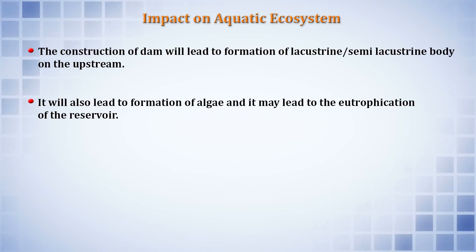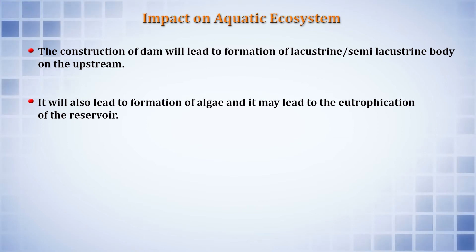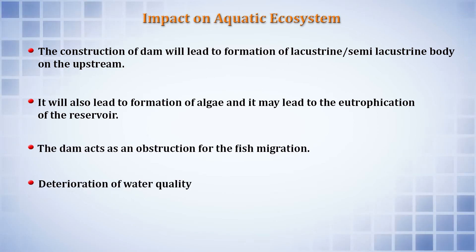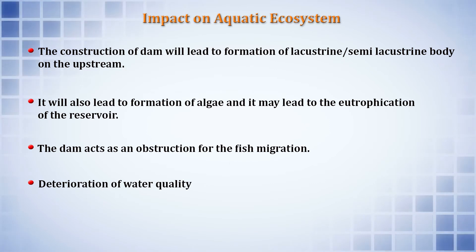Regarding impacts on the aquatic ecosystem, construction of a dam will lead to formation of a lacustrine or semi-lacustrine body in upstream areas, formation of algae, and eutrophication of the reservoir. The dam can act as an obstruction for fish migration, and deterioration of water quality will proceed — these are the key impacts on the aquatic ecosystem.